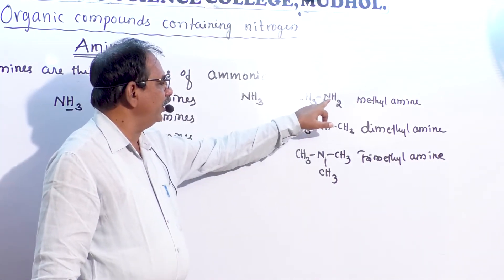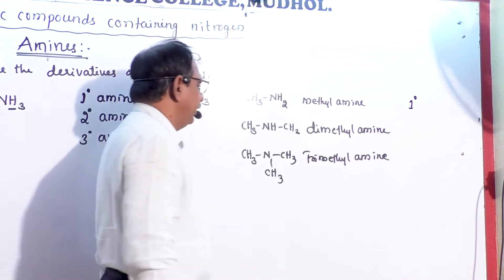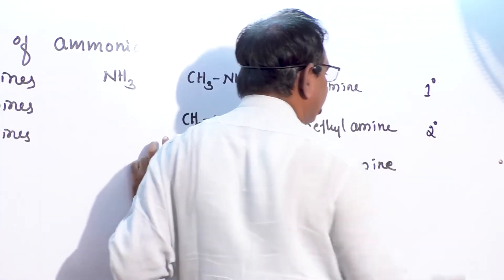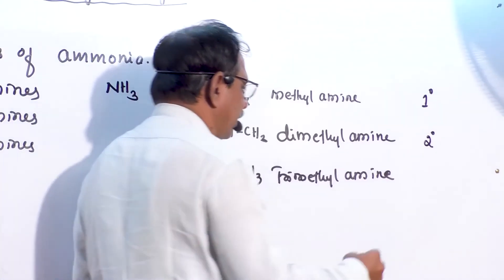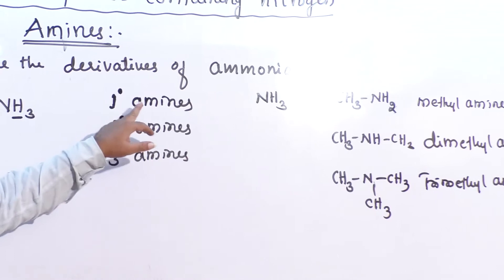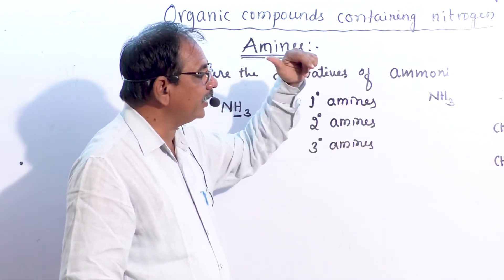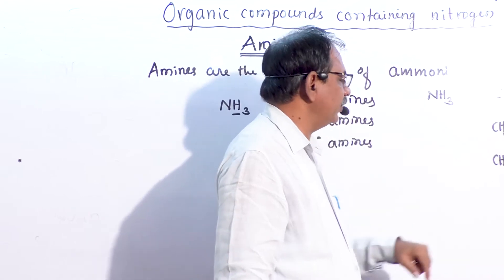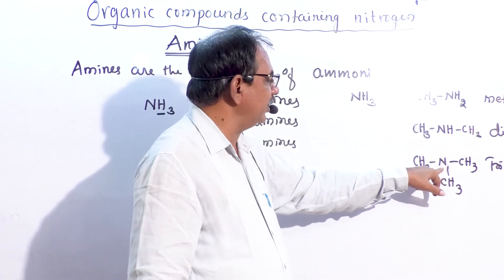Methylamine, containing only one methyl group, is an example of a primary amine. Dimethylamine, where two alkyl groups replace two hydrogen atoms, is a secondary amine. Trimethylamine, where three methyl groups replace all hydrogen atoms, is a tertiary amine. Primary amine contains one alkyl group and two hydrogen atoms; secondary amine contains two alkyl groups and one hydrogen atom; tertiary amine contains three alkyl groups and no hydrogen atom on the nitrogen.